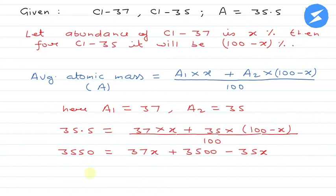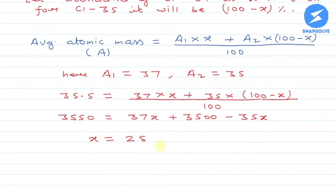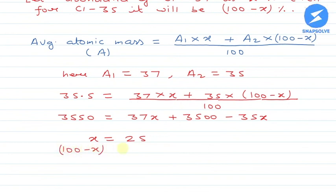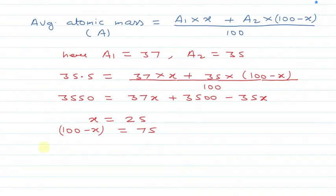यहाँ से x की value निकलती है: x = 25. So (100 − x) = 75.